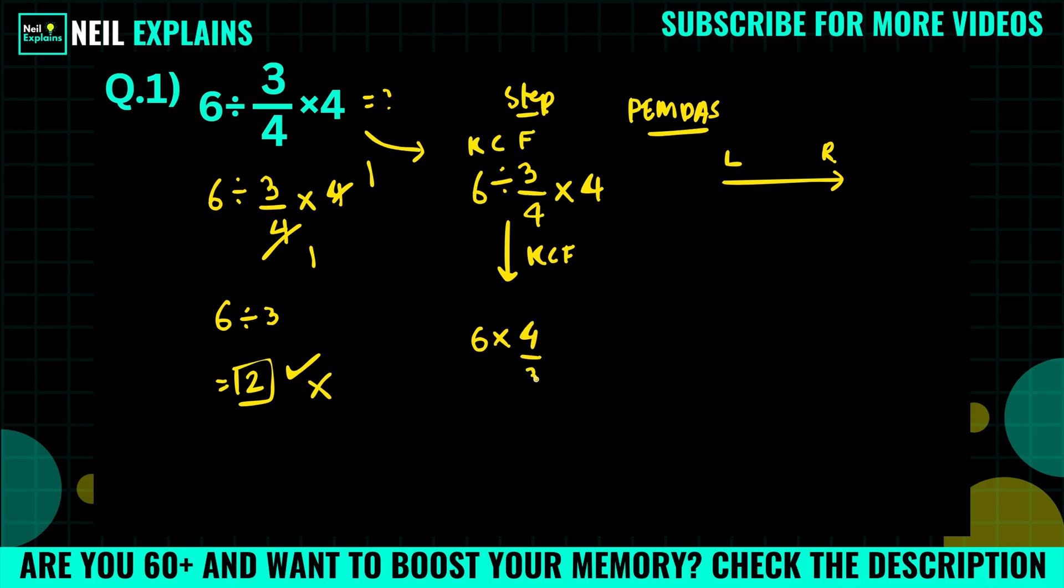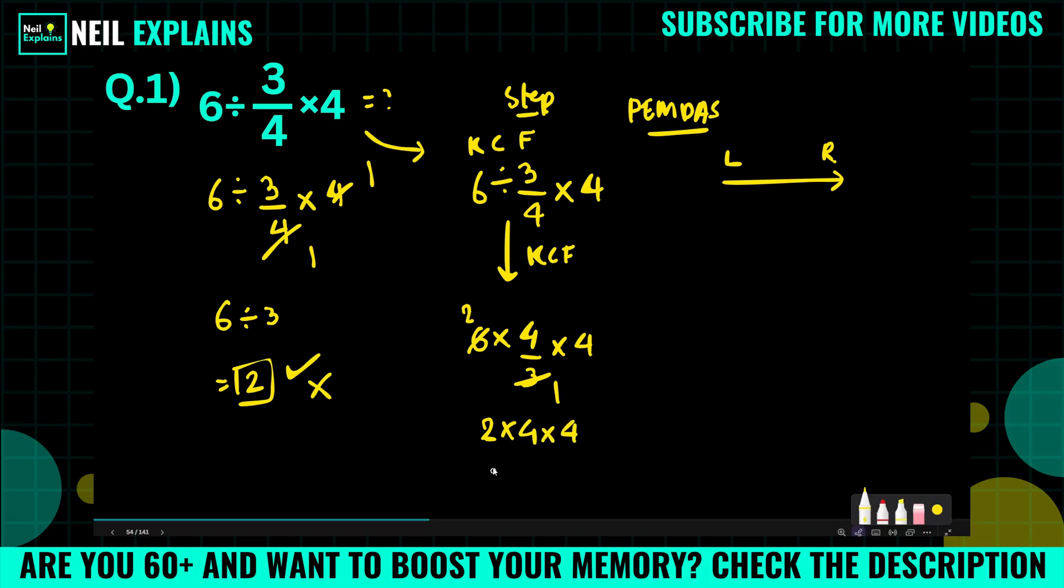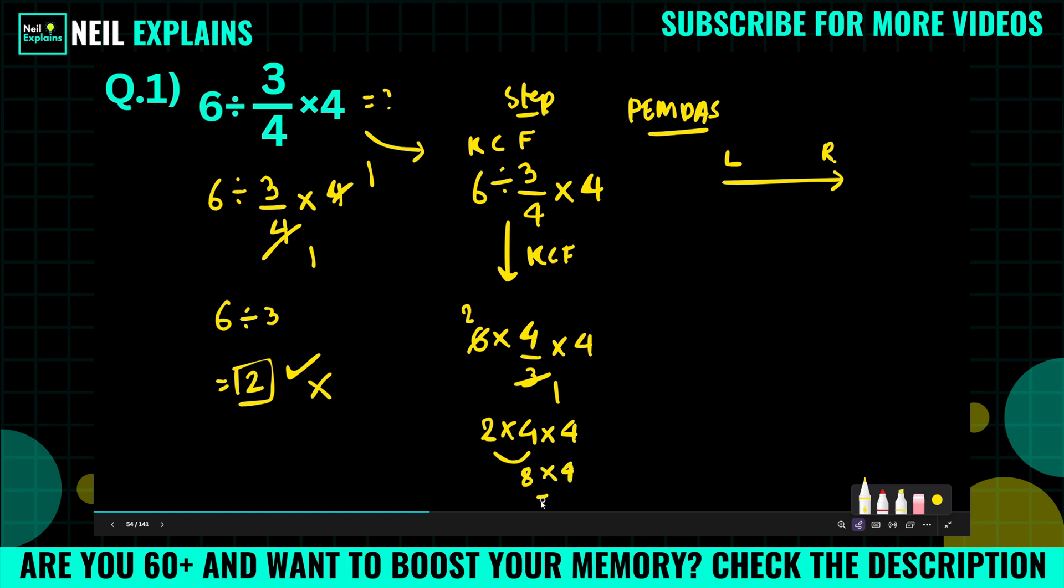So it will look like this: 4/3 times 4. Now what you can do, simply 3 into 6 is 2, so the equation will become 2 times 4 times 4. 2 times 4 that is 8, times 4, and 8 times 4 that is equal to 32. So here 32 is the right answer.